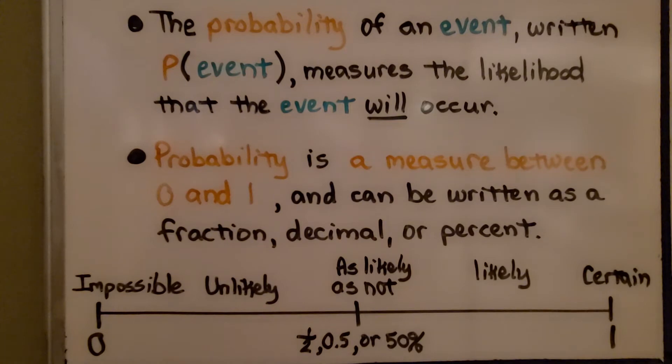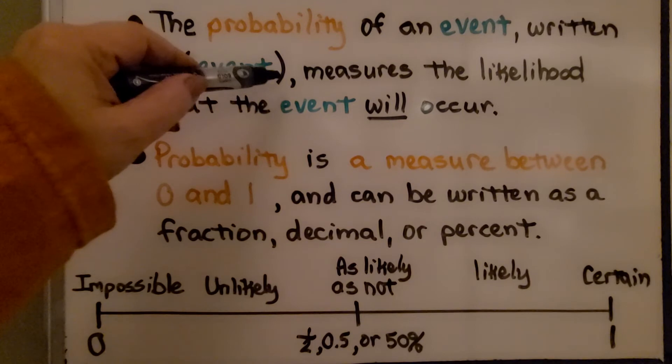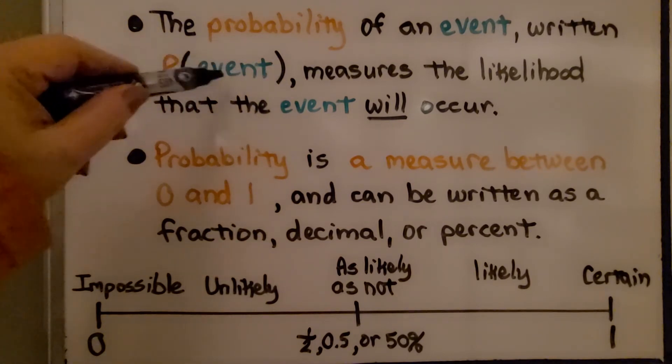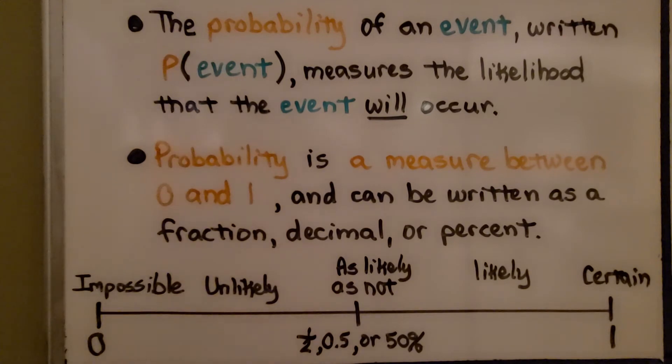The probability of an event, written as capital P with parentheses containing the event, measures the likelihood that the event will occur. Probability is a measure between zero and one and can be written as a fraction, a decimal, or a percent.